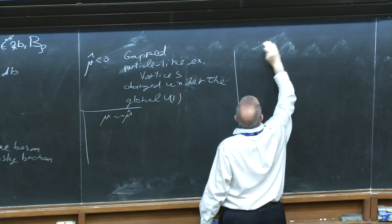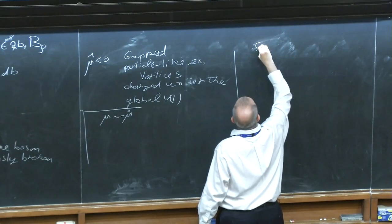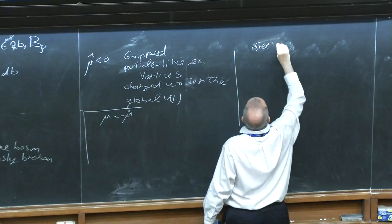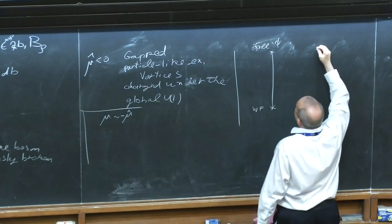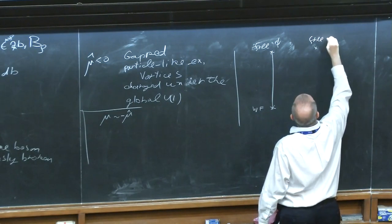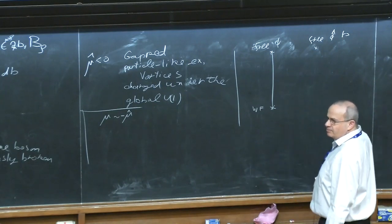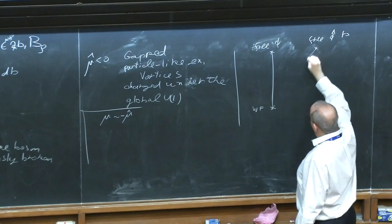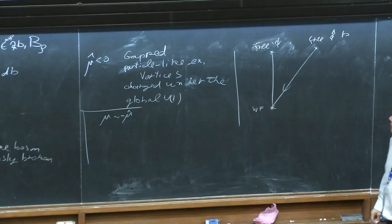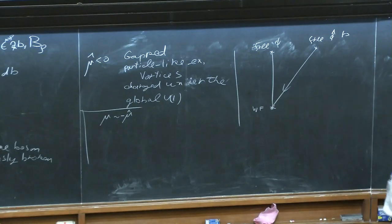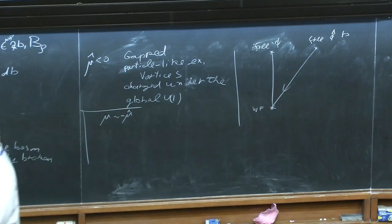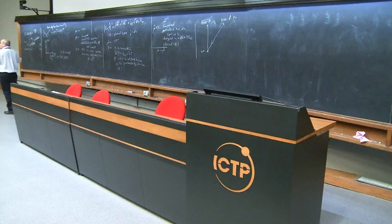The way we described the two phases was totally different but the outcome is exactly the same — this is the hallmark of duality. We have the Wilson-Fisher fixed point approached by a free phi perturbed by a relevant operator, and on the other side we have free phi-hat coupled to a dynamical gauge field B whose coupling becomes stronger — both flowing to the same fixed point. In this particular case there is almost a completely rigorous proof on the lattice, with some assumptions.